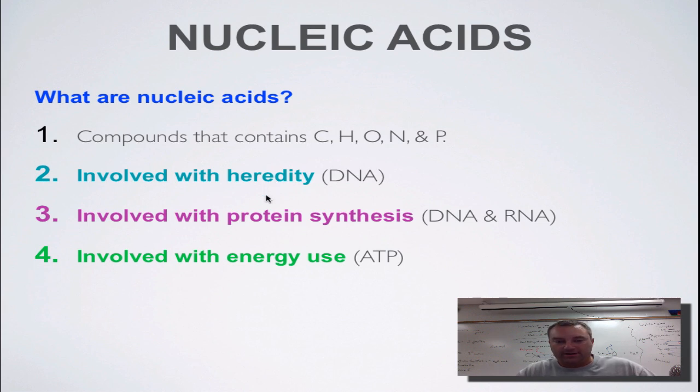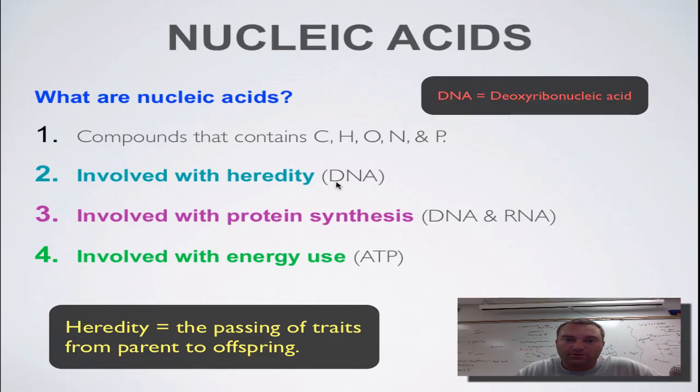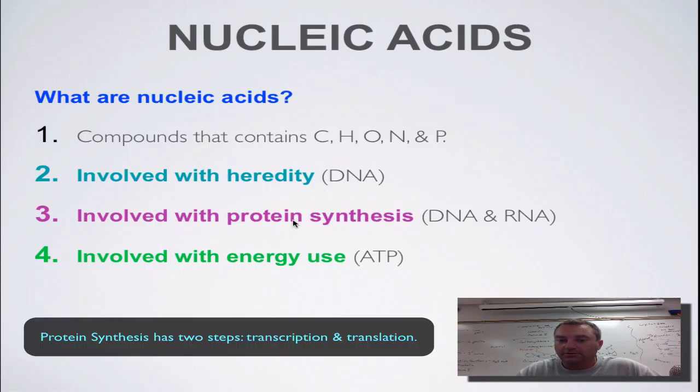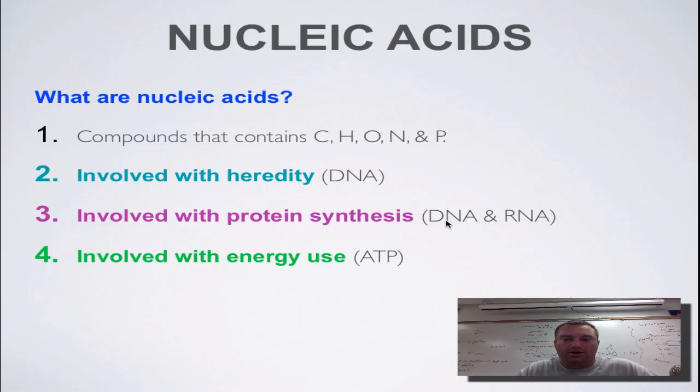They have a couple different functions. They're involved in heredity—that would be DNA, deoxyribonucleic acid. They're also involved in protein synthesis. This would be DNA and its cousin RNA, ribonucleic acid. Basically, DNA has the instructions for making proteins, and RNA is used to help make the proteins. But that's chapter 12 stuff.